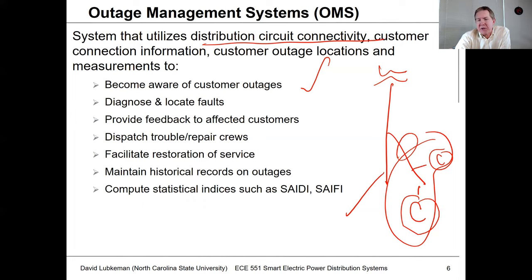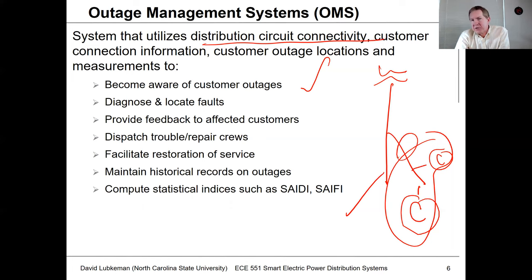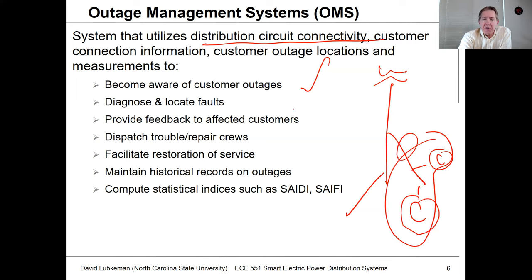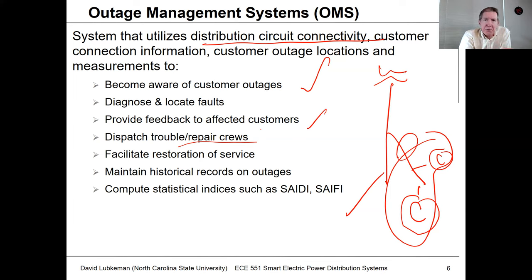The outage management system also provides a mechanism for giving feedback to customers. When a customer calls in saying they don't have service, you want to let them know the estimated time to repair and update that as information develops. You need a way of providing feedback to customers, dispatching crews — knowing what type of crew to send and helping to direct them once they're in the field — and facilitating restoration of service.